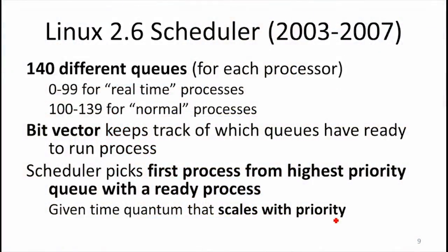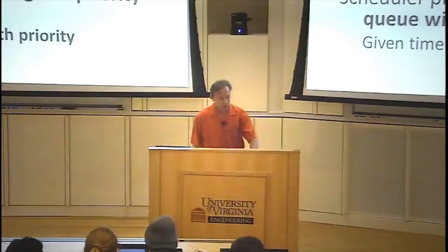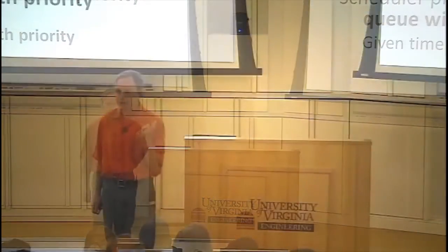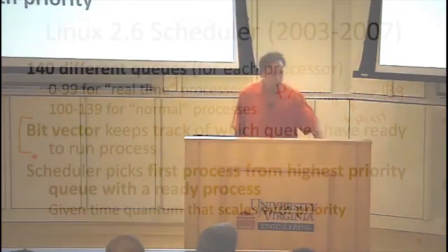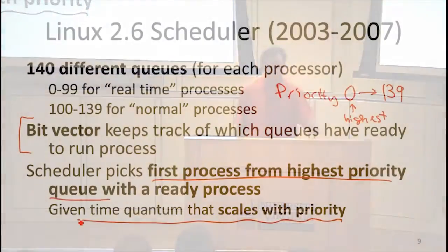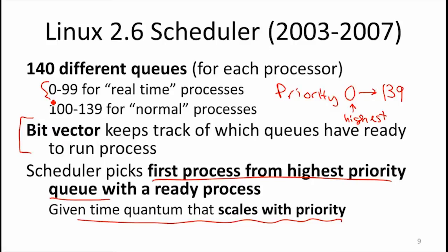Then it was replaced with a new scheduler. So this was Linux 2.6. The strategy that Linux 2.6 had for scheduling was to have 140 different queues. There's a queue for each priority level. So we had priorities between 0 and 139. Priority level 0 is the highest. Higher numbers mean lower priority. And 0 to 99 meant you were real-time, 100 to 139 to 1 normal. What the scheduler would do is look for the queue that has a ready process. So there would be a bit vector that keeps track of whether or not a queue has any processes ready. Meaning they're waiting to use the CPU. And the scheduler would just pick the first process from the highest priority queue and give it some amount of time.